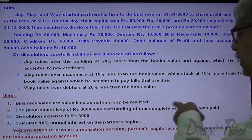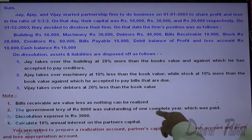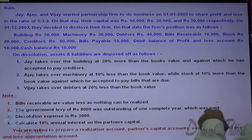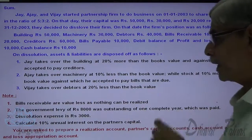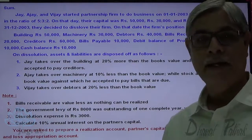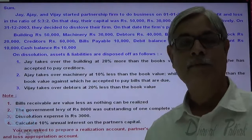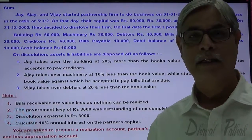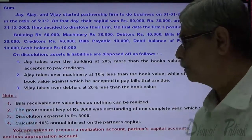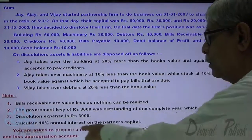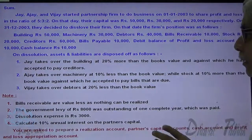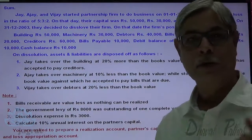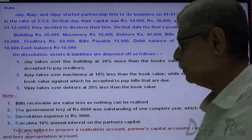An unrecorded liability of 8,000 was outstanding for one complete year and was paid. The journal entry for payment of unrecorded liability is realization account debit to cash. Dissolution expenses paid: 3,000 — the entry is realization account debit to cash account credit.